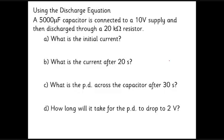You get some, as ever, you get some easy questions and you get some hard questions on this. So a 5,000 microfarad capacitor is connected to a 10-volt supply and then discharged through a 20,000-ohm resistor. So the initial current, remember to do the initial current, we just do V equals IR. So I equals V over R, it's 10 volts, 20,000 ohms. So the initial discharge current is 5 times 10 to the minus 4 amps.